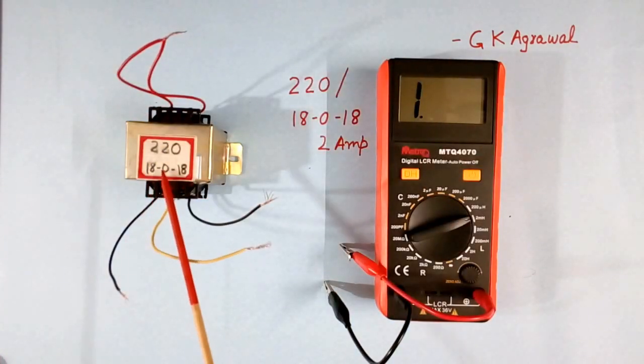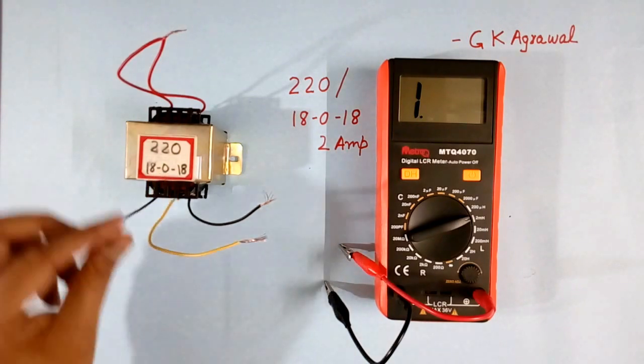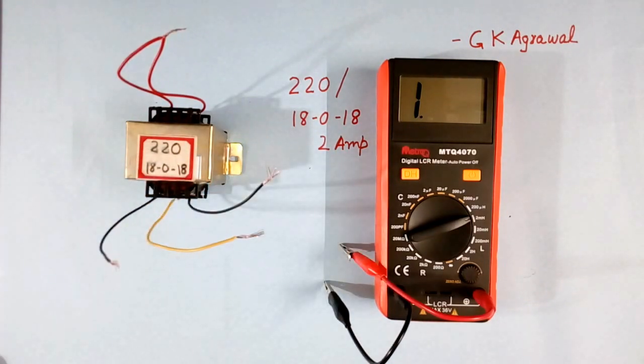Now this has become an inductor. These windings will behave like an inductor. Now we will connect the LCR meter across this and measure the value of L and R.